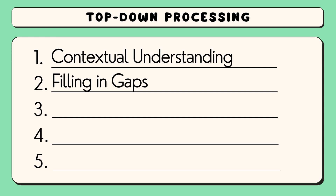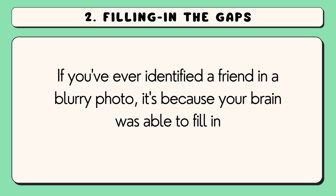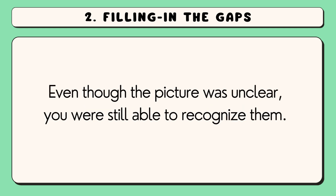That brings us to our second key feature of top-down processing: filling in the gaps. Top-down processing plays a key role in filling in the gaps when information is missing or ambiguous. If you've ever identified a friend in a blurry photo, it's because your brain was able to fill in missing details based on your prior knowledge of your friend's appearance. So even though the picture was unclear, you were still able to recognize them.